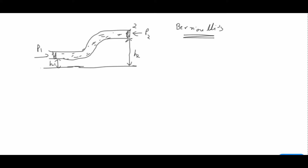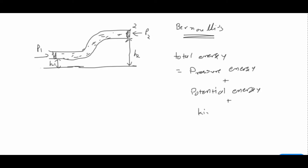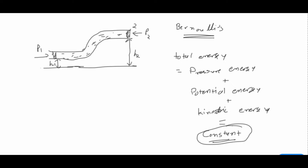We can apply Bernoulli's theorem at sections 1 and 2. The basic definition of Bernoulli's theorem: as per Bernoulli's theorem, the total energy of a flowing fluid — that is pressure energy, potential energy mgh, plus kinetic energy half mv squared — per unit volume or mass of an incompressible and non-viscous fluid is constant throughout the flow.